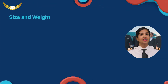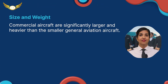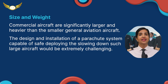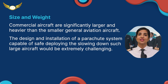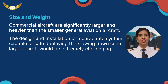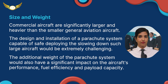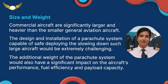1. Size and Weight. Commercial aircrafts are significantly larger and heavier than smaller general aviation aircrafts. The design and installation of a parachute system capable of safely deploying and slowing down such large aircraft would be extremely challenging. The additional weight of the parachute system would also have a significant impact on the aircraft's performance, fuel efficiency, and payload capacity.